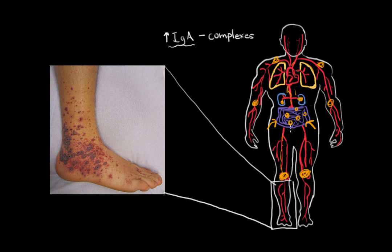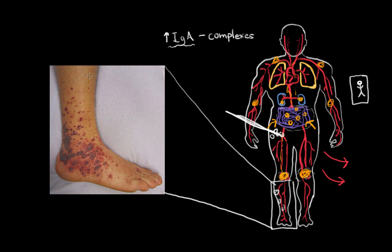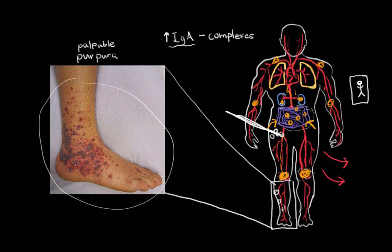Henoch-Schönlein purpura is the most common vasculitis that affects children. You can see a child with abdominal pain, joint pain, bloody urine, and bloody stools — which is terrifying for parents. One of the classic symptoms are skin lesions, most commonly on the buttocks but also on the legs, called purpura. This is not a normal rash — it is palpable purpura. Immune complexes deposit in the area, causing damage to blood vessels supplying the skin and death of skin cells. The rash is palpable — you can feel the bumps — due to swelling from immune complex deposition.